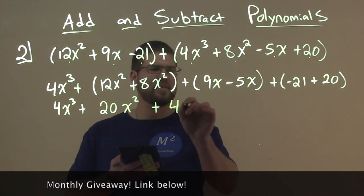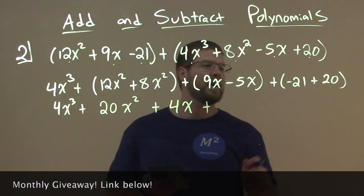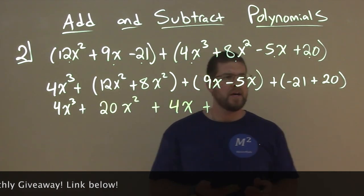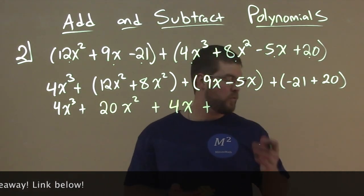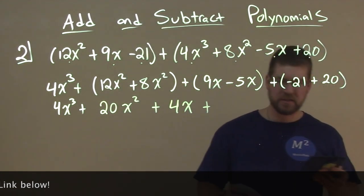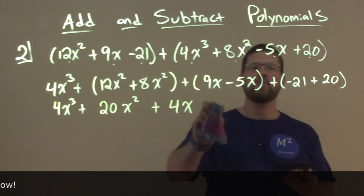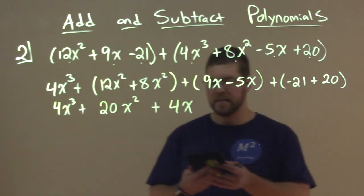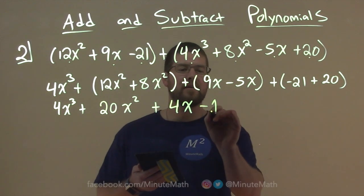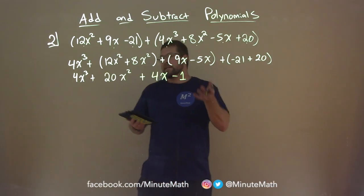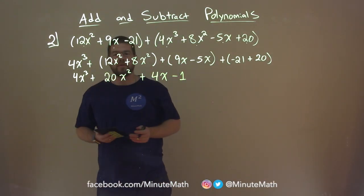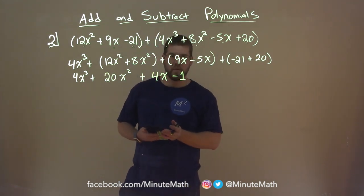And lastly, negative 21 plus 20 is a negative 1, which we can write with just subtraction here. So instead of writing a negative 1, we're just going to write a minus 1. And we're done. We got it. We have our answer: 4x to the third plus 20x squared plus 4x minus 1.